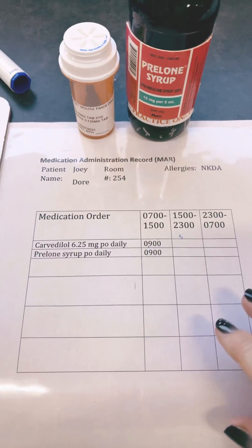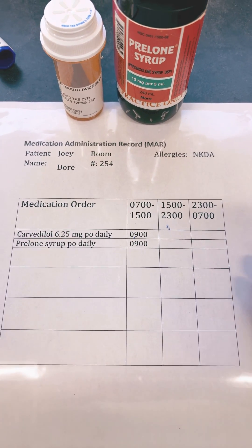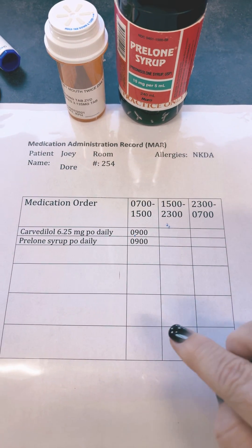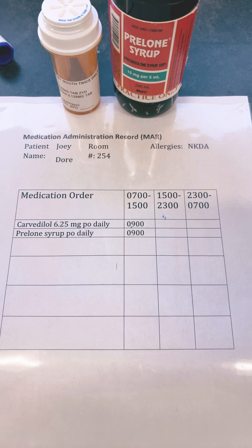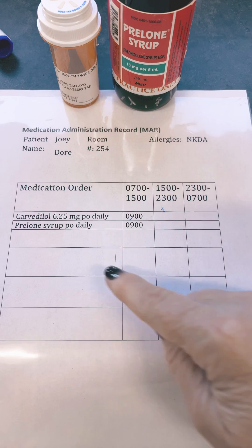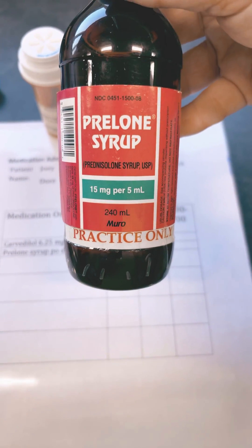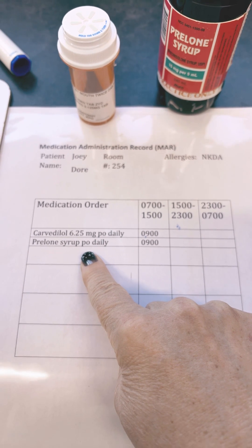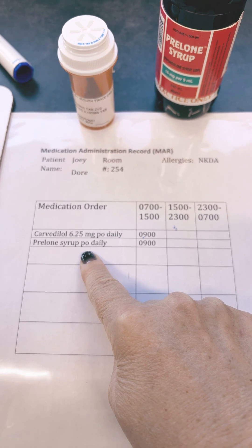Let's look at our next drug order. This is Joey Dore, room 254, no known allergies. We have Carbidale 6.25 milligrams and prednisone syrup PO daily. Do you see what the error is with this order? If you look, we don't have a dosage for the prednisone syrup. There's a dosage on the bottle, but the doctor did not order a dosage. So we need to call to get that order clarified.